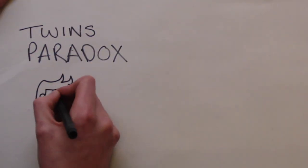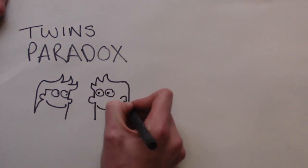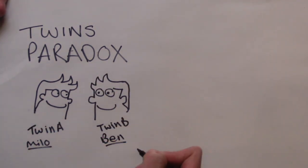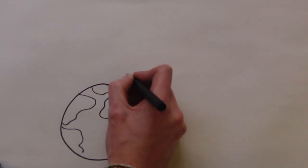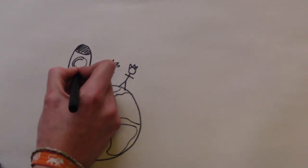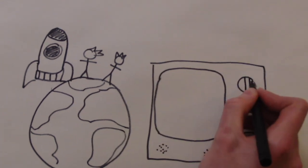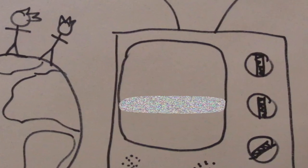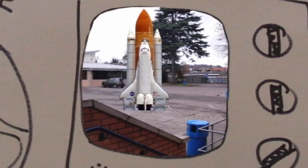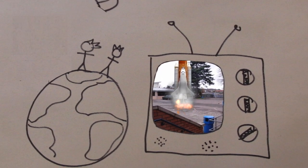Welcome to Ben and my physics presentation video on the twins paradox. In this video we're going to have two identical twins on Earth: Twin A and Twin B. Twin A is Milo and Twin B is Ben. The twins paradox is an interesting concept. There are two identical twins of the same age. One twin, however, Milo, aspires to be an astronaut, so he takes off for an interesting life exploring the cosmos while I stay on Earth.